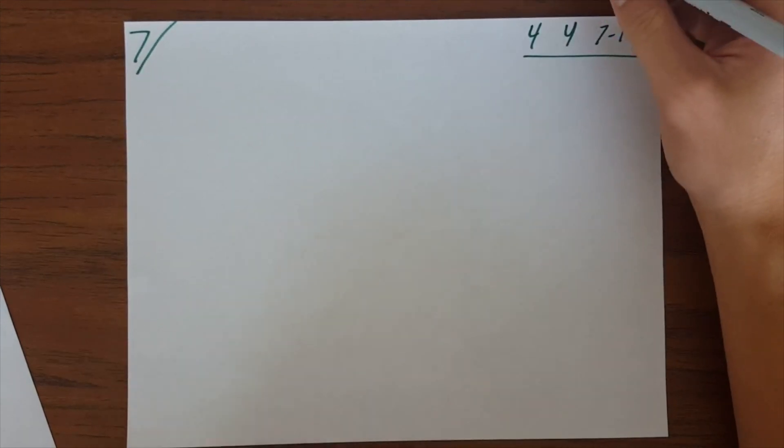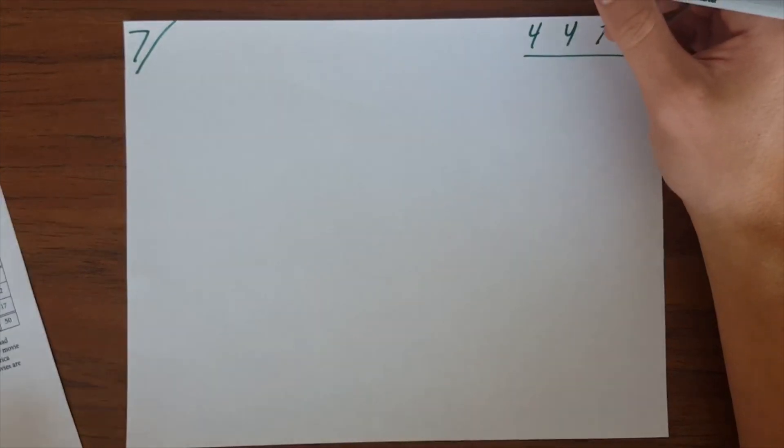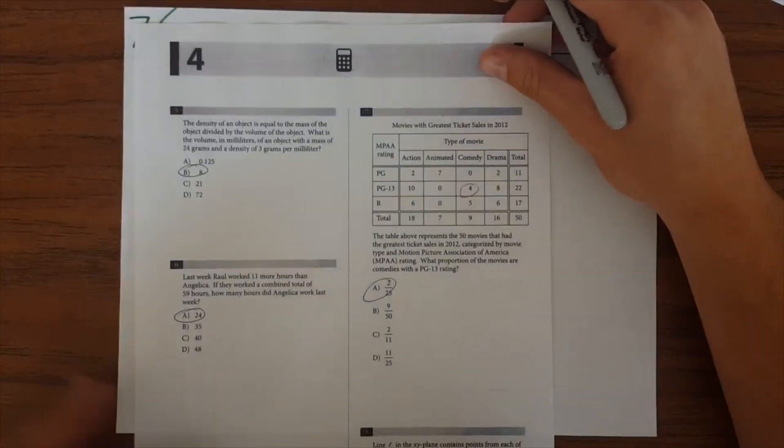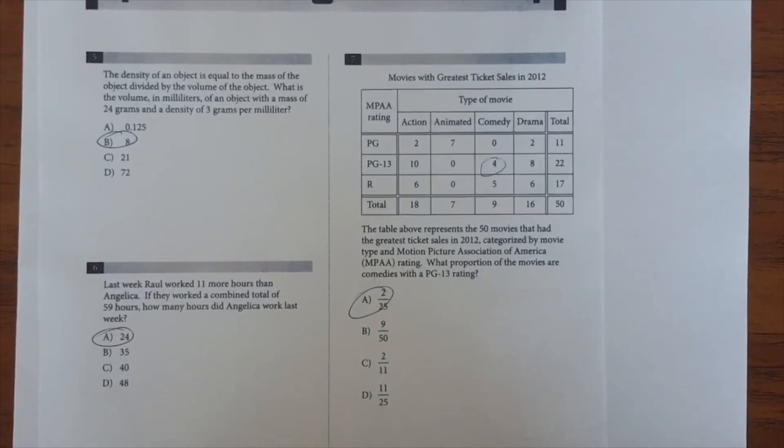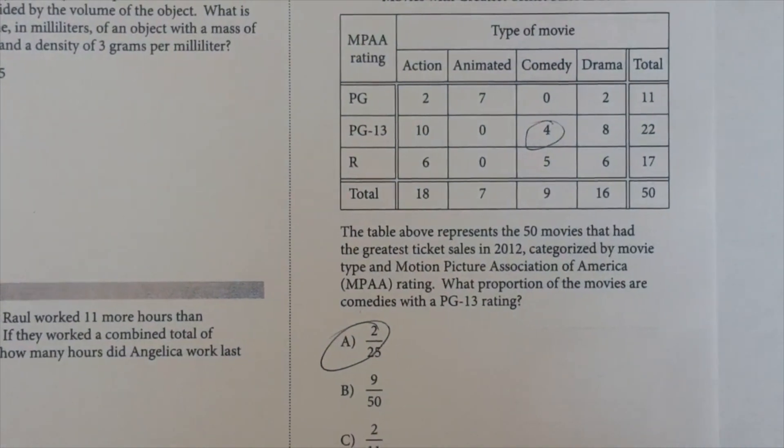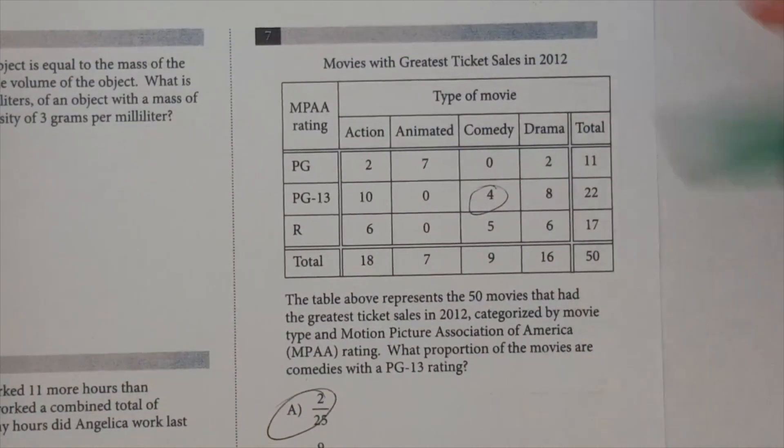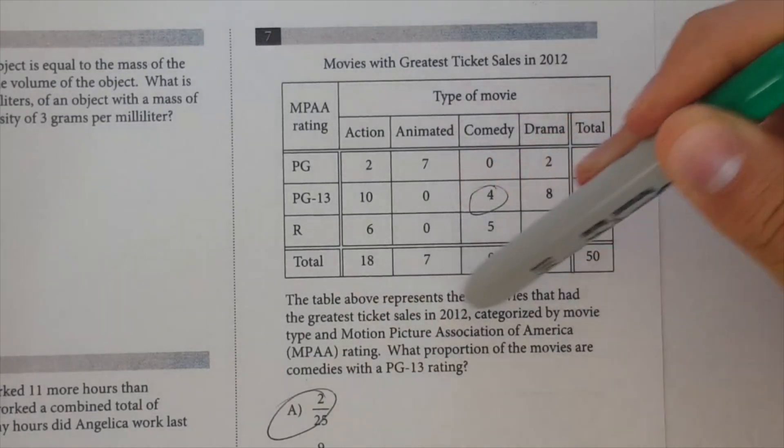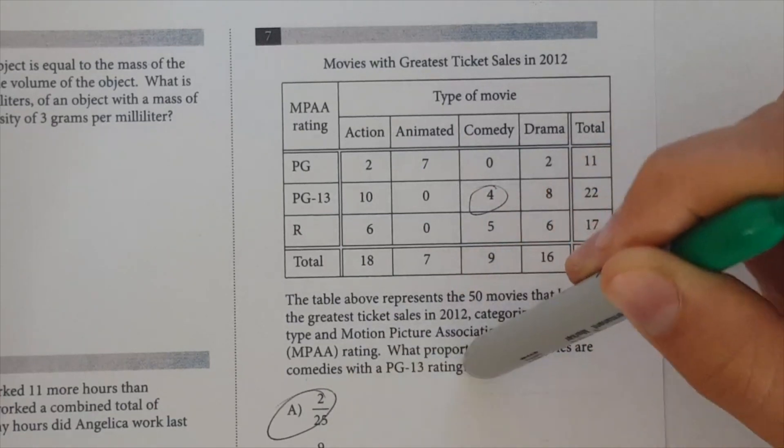And 7 is, it has a chart with movie sales, so basically, probably the easiest thing for me to do would be just to put this in frame here. Let's see if I can get a zoom. Okay, so, sorry that you can see the answer beforehand, but basically it's asking, the table above represents 50 movies that had greatest ticket sales in 2012.